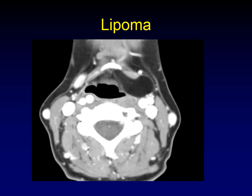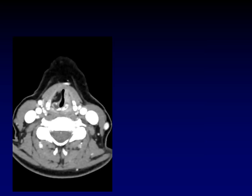Lipomas can find their way into the larynx. Here is one traversing the thyrohyoid membrane to enter the laryngeal surface — a lot of it is outside the larynx, but some is inside. A lipoma can be exclusively intralaryngeal or mixed. The diagnostic feature is the CT attenuation, which is the same as fat in other locations. Here's another patient with a lesion that looks just like that lipoma — a fat-containing mass right inside the true vocal cord.